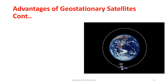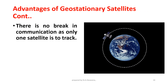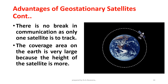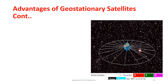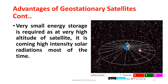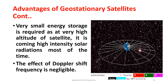There is no break in communication as only one satellite is to track. The coverage area on Earth is very large because the height of the satellite is more. Very small energy storage is required, as at very high altitude the satellite receives high-intensity solar radiation most of the time. The effect of Doppler shift frequency is negligible.